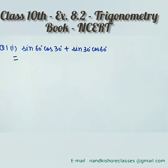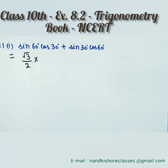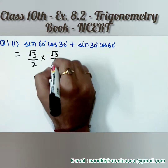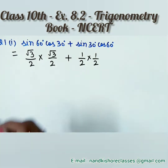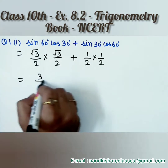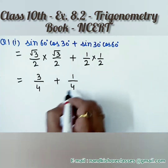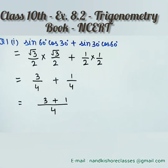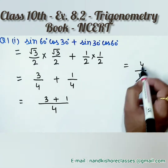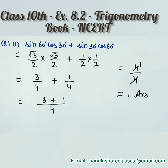The value of sine 60 is root 3 by 2. The value of cos 30 is again root 3 by 2. Sine 30 is 1 by 2, and cos 60 is also 1 by 2. So root 3 into root 3 is 3, 2 into 2 is 4, 1 into 1 is 1, 2 into 2 is 4. Taking LCM 4, we get 3 plus 1 by 4, which gives 4 by 4, and the final answer is 1.